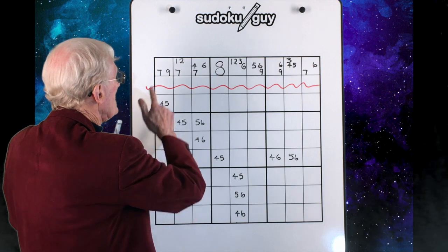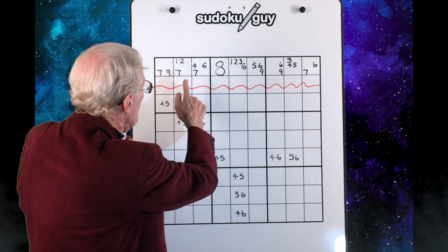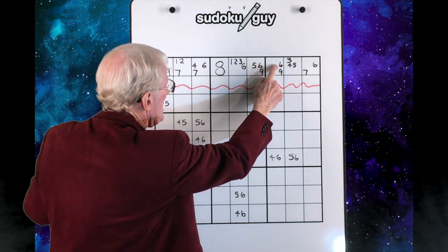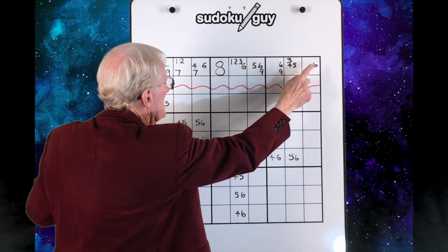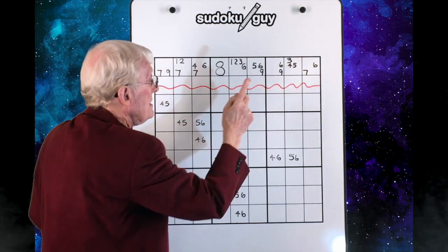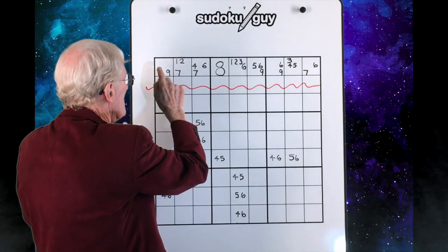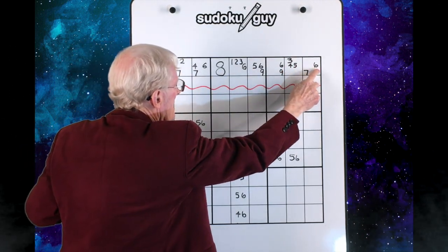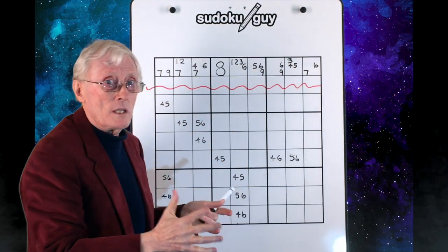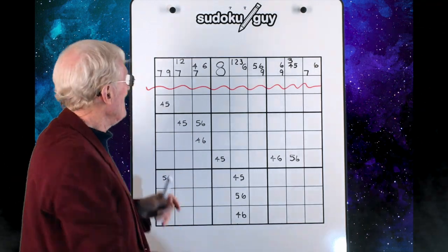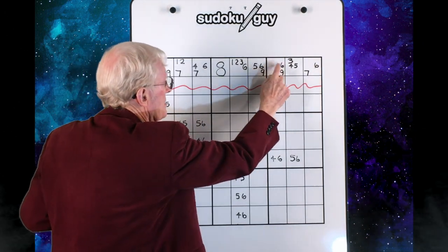If you haven't picked them up yet, let me show you two of them. Here we have 7, 9. Here we have 6, 9. And here we have 6, 7. How many numbers there? We have 7, and 6, and 9. Only 3 numbers. And they can only go in these 3 cells.